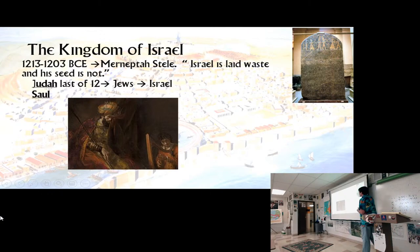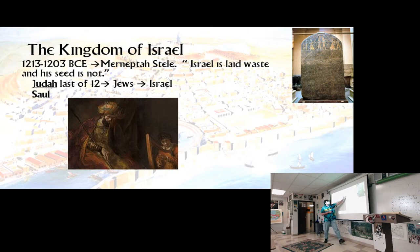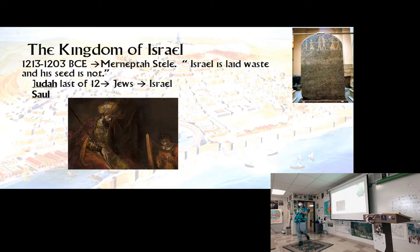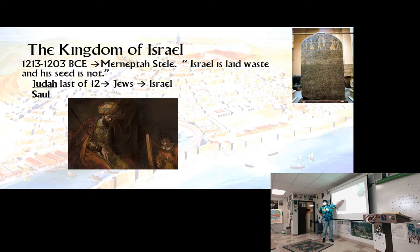A couple of things about the Kingdom of Israel. The first mention we have of Israel is called the Merneptah Stele, which says 'Israel is laid waste and his seed is not' — shockingly scary but it's mentioned right before the exile. The last of the 12 tribes would form the Kingdom of Judah. From Judah you get Jews, coming from the patriarch Jacob. His followers would be known as Israelites, and that's where we get the Kingdom of Israel. Saul would be the first king of Israel.